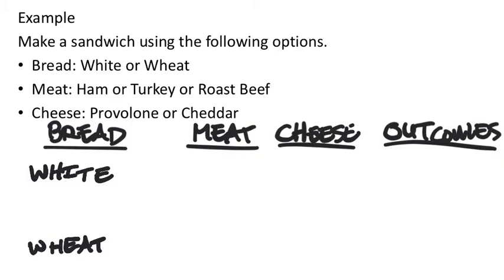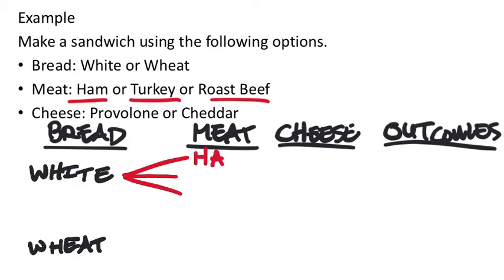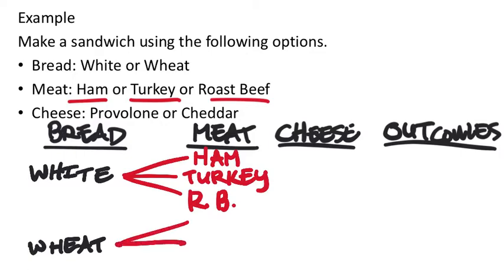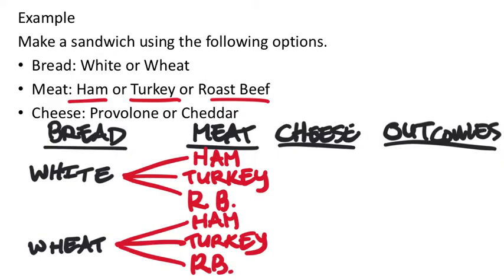From the bread, you have meats, and there are three different choices: turkey, ham, or roast beef. That means this part of the tree branches out into three different meats — ham, turkey, and roast beef. And if you chose wheat bread, you'd have the same three choices. For cheese, you've got provolone or cheddar.